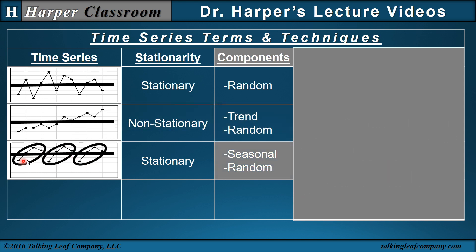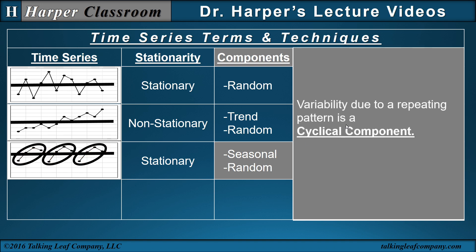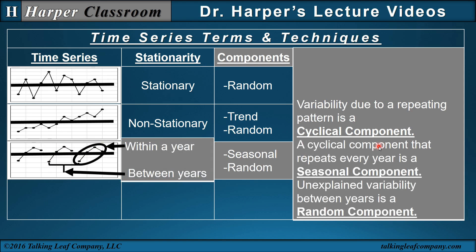The third time series has variability around the stationary mean, but there's a pattern that repeats every four. Variability due to a repeating pattern is called a cyclical component. If each one of these time periods is a quarter and four quarters make a year, then this pattern repeats every four quarters or every year. A cyclical component that repeats every year is called a seasonal component. The unexplained variability between the years is a random component.